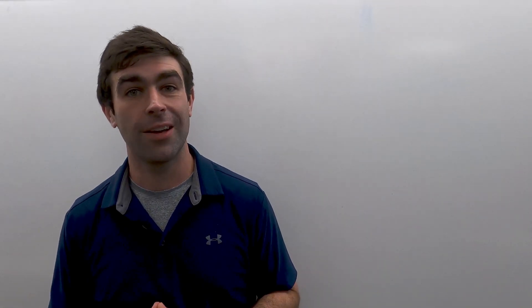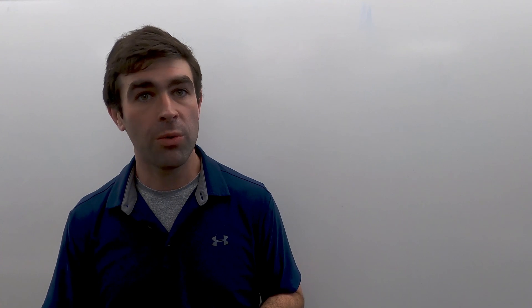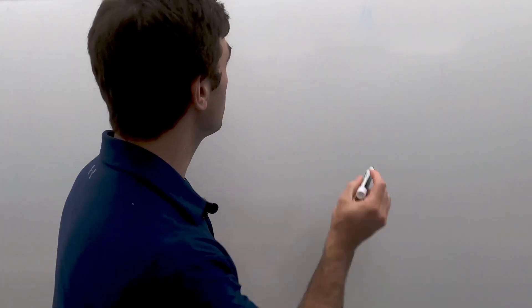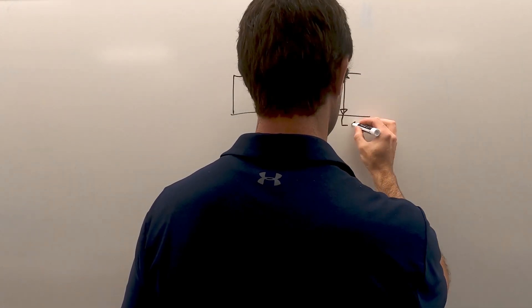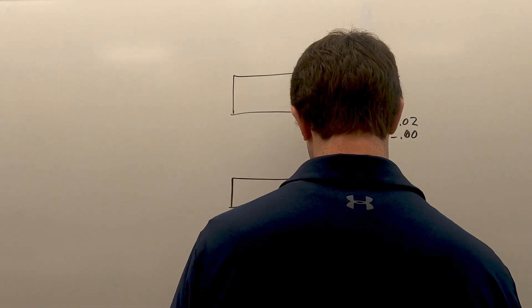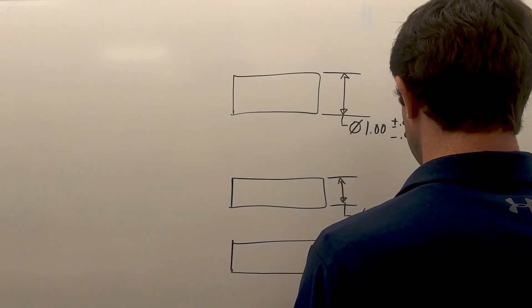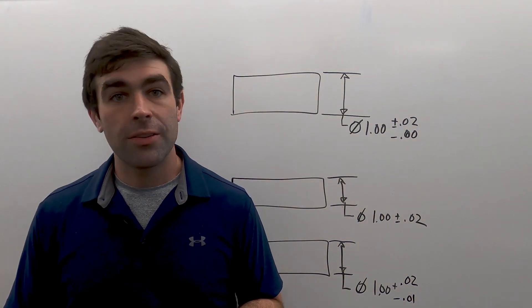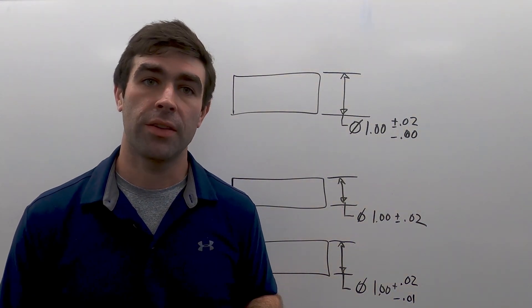Plus minus dimensioning is one of the most common things you're going to see on a drawing. It comes in several flavors. Unilateral, bilateral equal, and bilateral unequal. Our unilateral dimension is something you'll typically see on tightly toleranced parts or things that have fits.